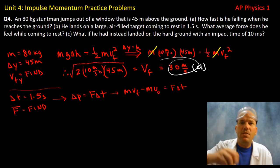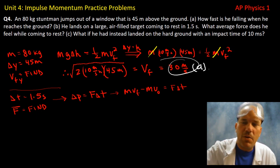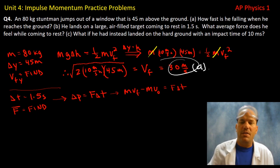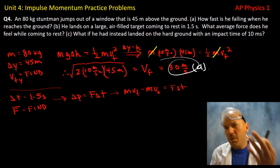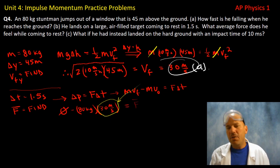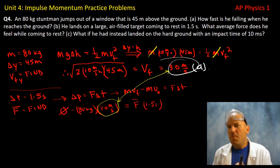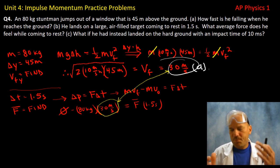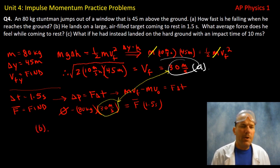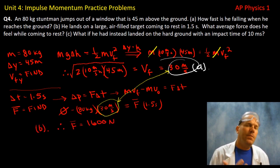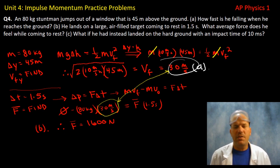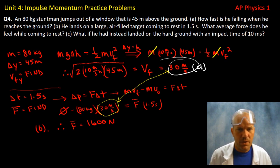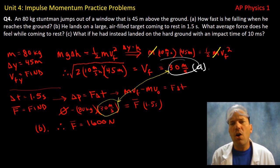During the impact, we found his initial velocity from part a, and his final velocity is zero. So we have zero minus the momentum found earlier, set equal to force times 1.5 seconds. Rearranging algebraically, the average force exerted on the stunt man's body during the collision is 1,600 newtons.